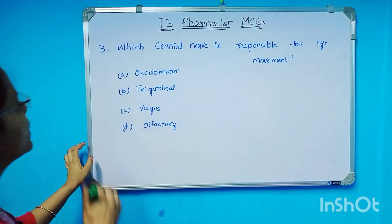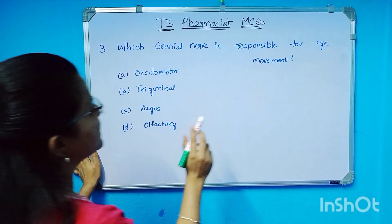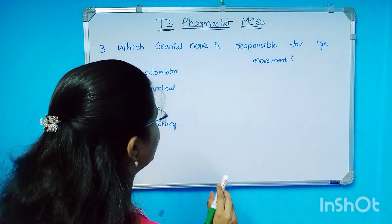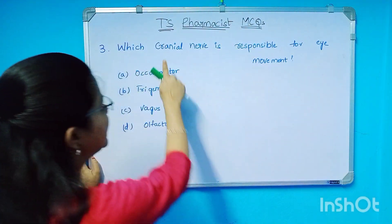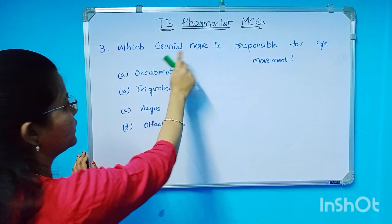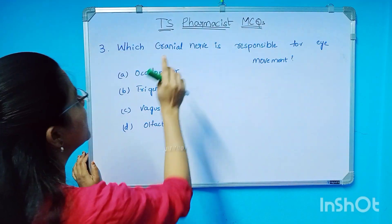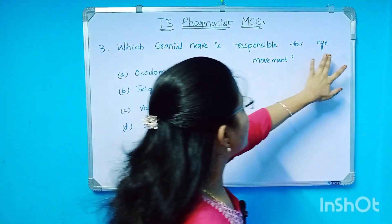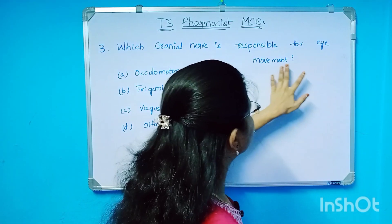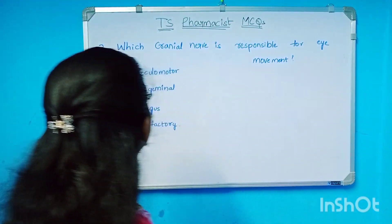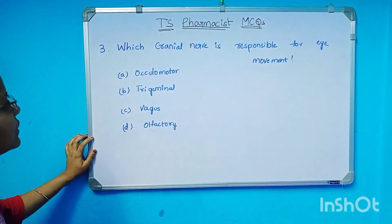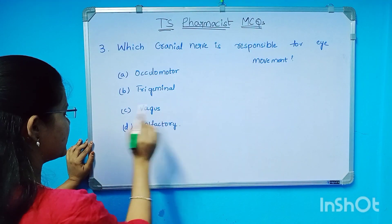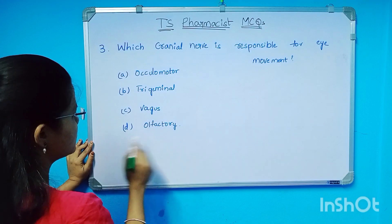It is a question about cranial nerves — which cranial nerve is responsible for eye movement? The options are oculomotor, trigeminal, trochlear, and abducens.